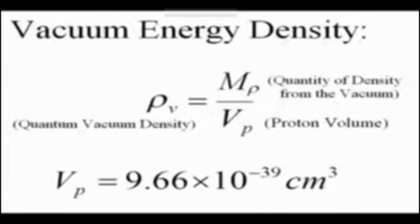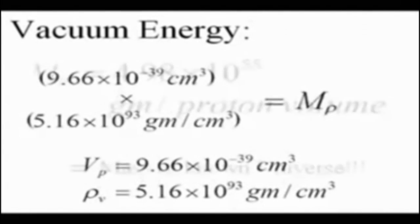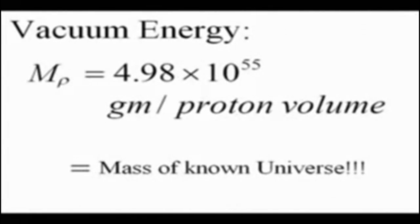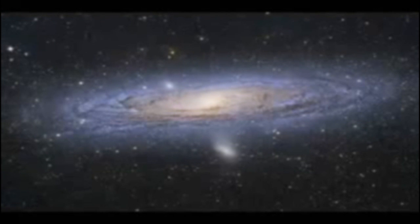A density is mass per unit volume, so if you multiply a density by a volume, the V's cancel to give the amount of mass that would be contained within a proton volume, which is 4.98 times 10 to the 55th grams, which also happens to be the mass of the entire universe, existing inside each and every proton.